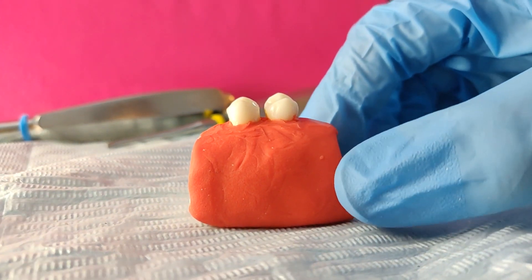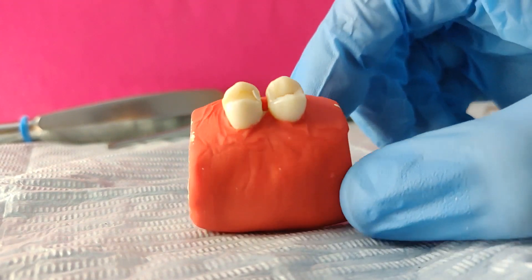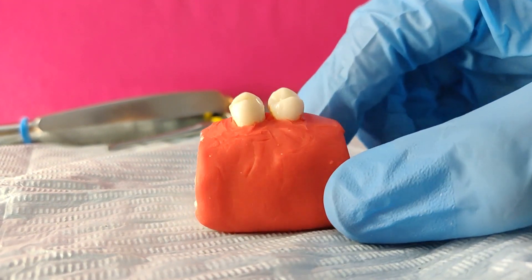And this red dough resembles the gingiva or the mucosa which cover the underlying alveolar bone.